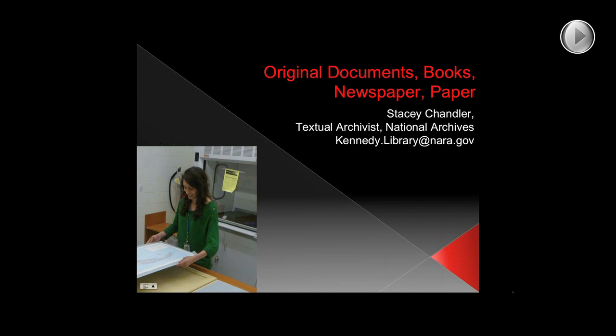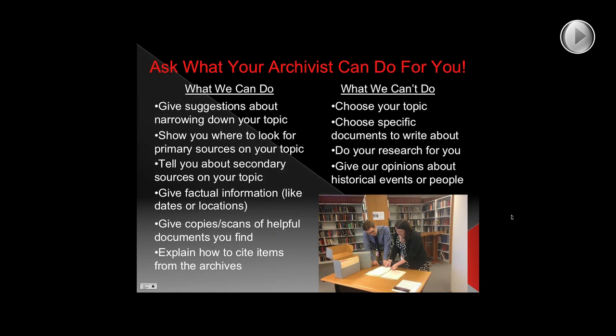Archivists are a little different from historians, teachers, and even librarians. We work directly with primary sources, so we can tell you what we have in our archives that can help you, and let you know about other archives we think might be useful. We can give you suggestions about secondary sources on your topic, give you facts like dates and locations, copy or scan documents, and tell you how to cite them. There are some things we can't do because we're archivists and not historians. We can't pick specific documents for you to study, and we can't do any analysis or interpretation. We also can't proofread your project or give our opinions about historical events or people. But when in doubt, just ask — we are here to help you find what you need.